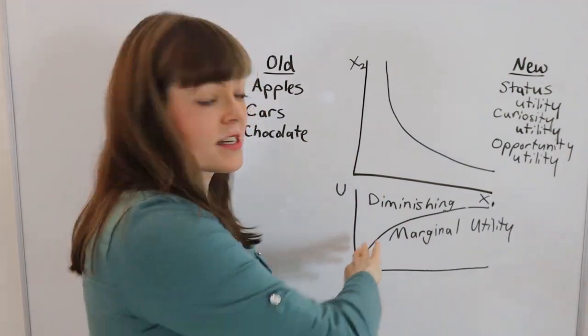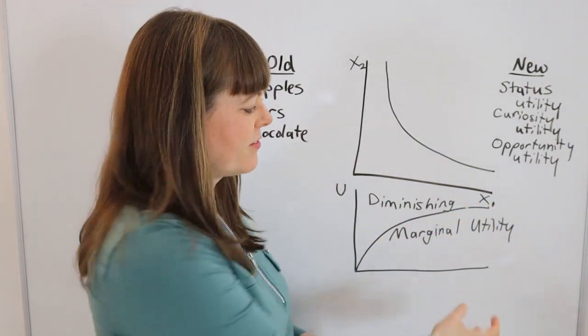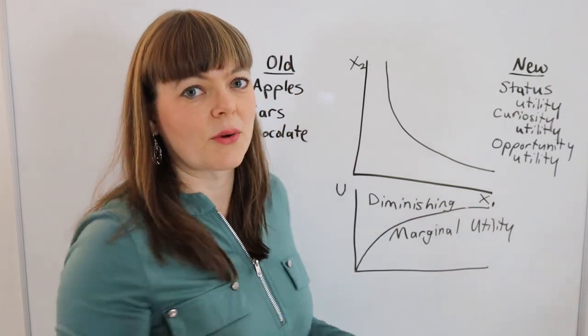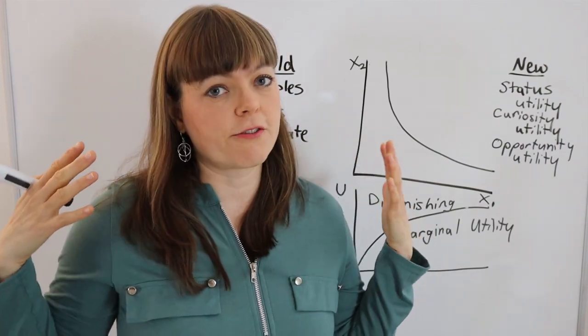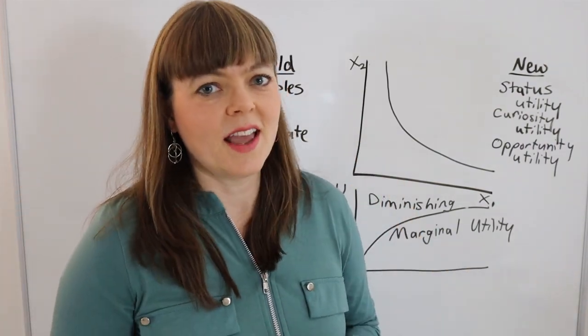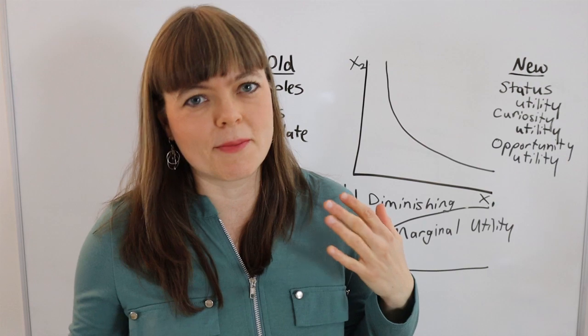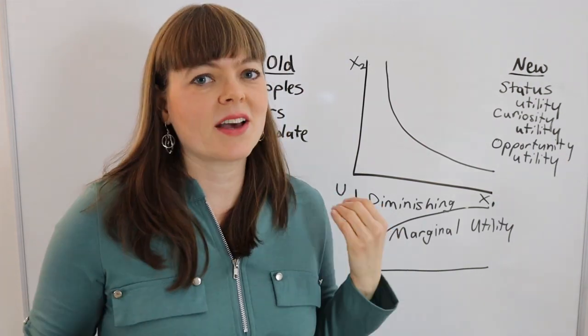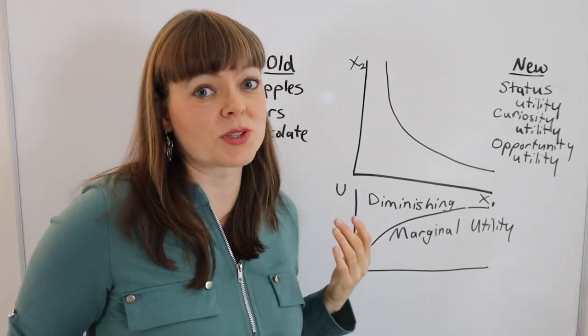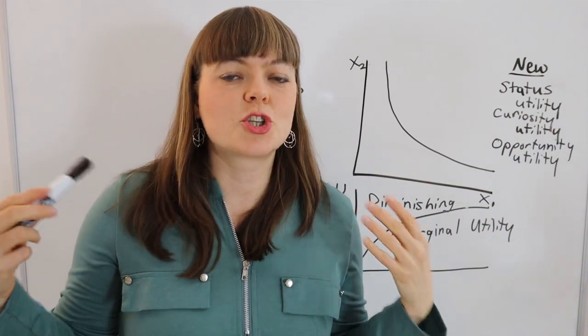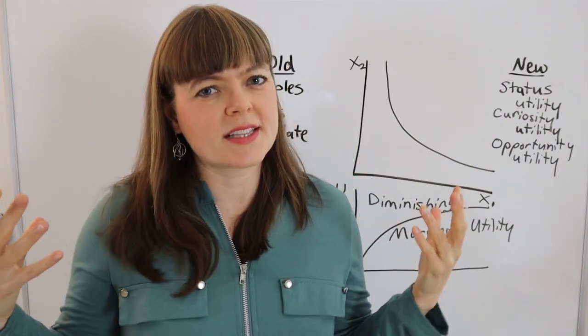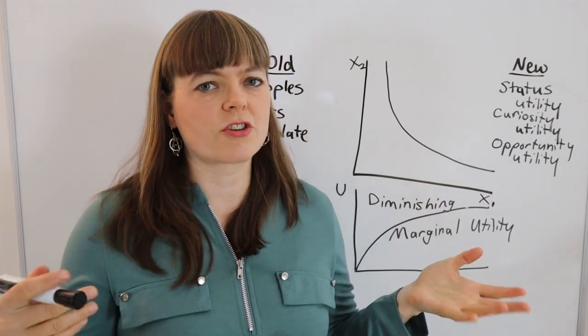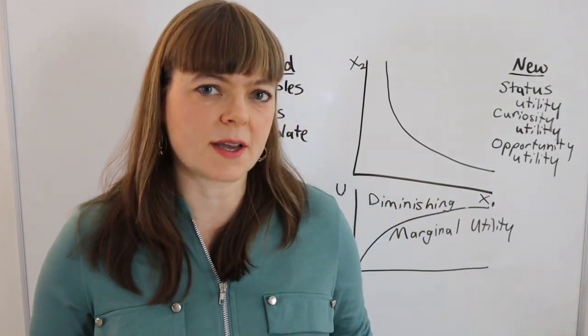And this is the diminishing marginal utility graph, so apples or chocolate is down here. I think that's fine for introducing students in their first econ class, and maybe early in intermediate microeconomic theory, because these things are easy to visualize. And I do think there's huge benefit to students being able to visualize in their head what's going on when they're learning these complicated new concepts.